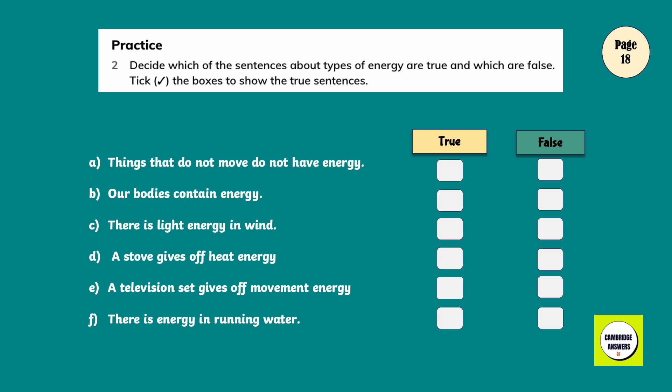Decide which of the sentences about types of energy are true and which are false. Tick the boxes to show the true sentences. Things that do not move do not have energy. False. Our bodies contain energy. True. There is light energy in wind. False. A stove gives off heat energy. True. A television set gives off movement energy. False. There is energy in running water. True.